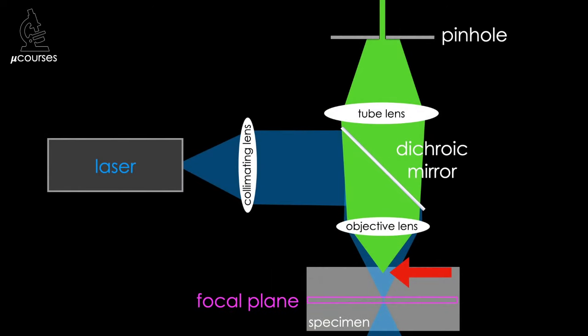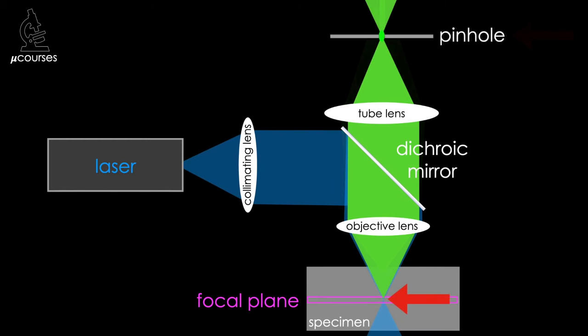To summarize: objects outside of the focal plane of the objective are illuminated and emit light, but come into focus outside of the image plane, so the pinhole blocks the majority of the out-of-focus fluorescence from reaching the detector. Meanwhile, images of objects that reside within the focal plane of the objective pass through the pinhole to the detector.